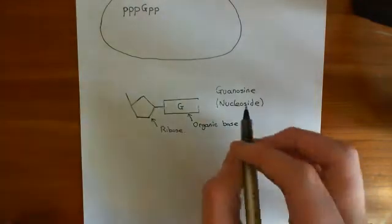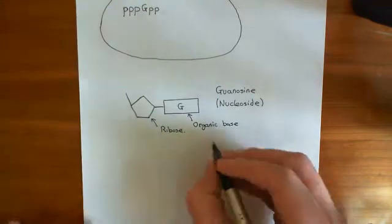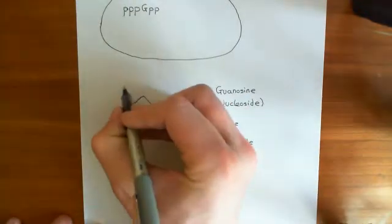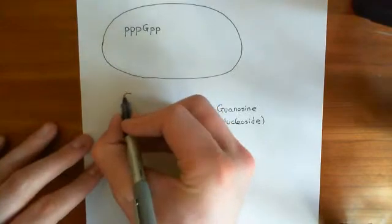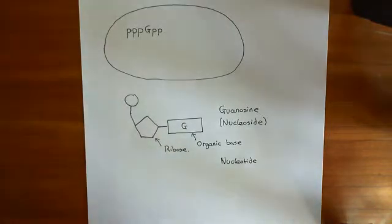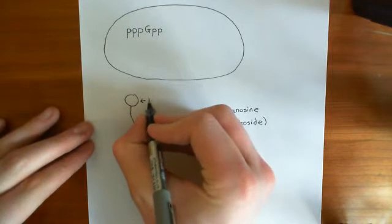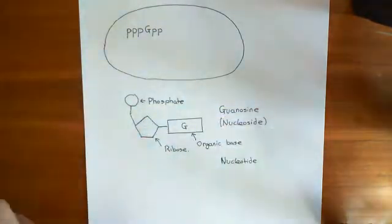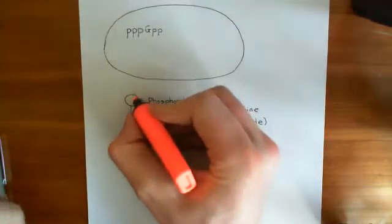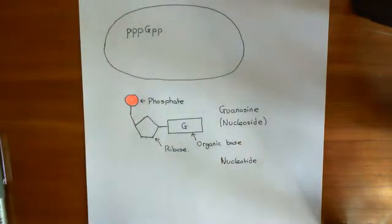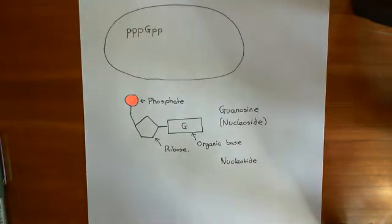To convert a nucleoside — which is a ribose sugar with an organic base — into a nucleotide, which is the word people are more commonly familiar with, what you need to do is add on a phosphate group to this fifth carbon up here. So if you have an organic base with a ribose sugar plus a phosphate, that is what is known as a nucleotide. Nucleotides are really what are used in RNA; what's used in DNA is strictly deoxynucleotides, because those are made with deoxyribose, the sugar used in DNA.